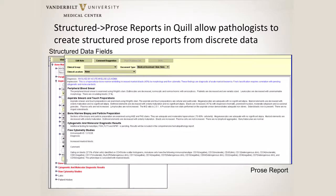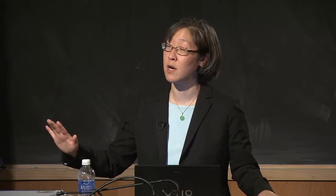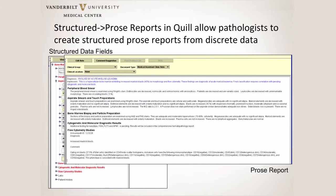Quill creates a structured prose report. This is an ideal system to develop a synoptic report, but when we polled our clinician colleagues and the clinicians polled their patients, the patients uniformly said they wanted a prose report, not a synoptic report. So we had Quill turn it into a prose report. There are some glitches — what we refer to as 'Quill speak' that is sometimes stilted — but for the most part we get a nice, readable, structured prose report from all of this.